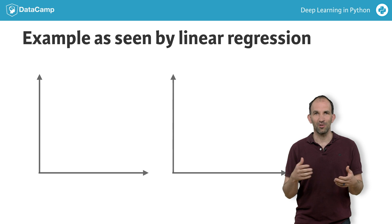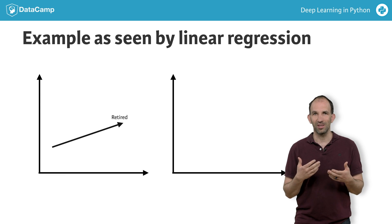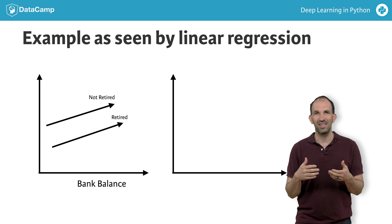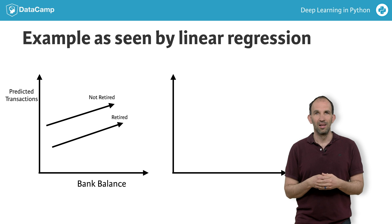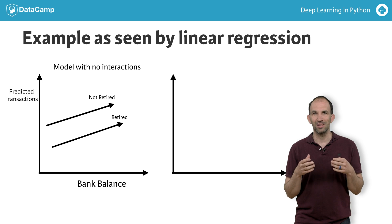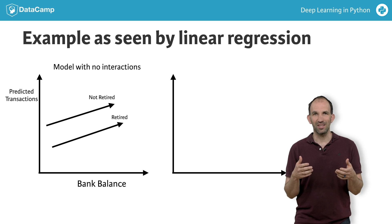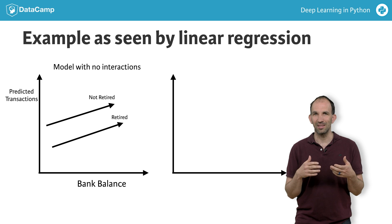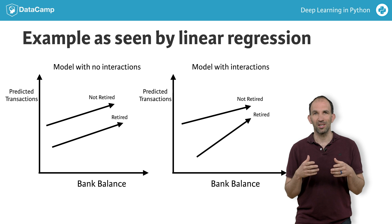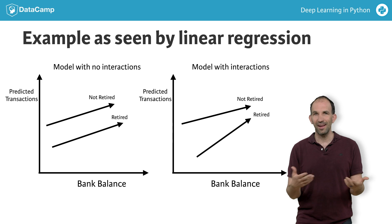Say we plot predictions from this model. We draw one line with the predictions for the retired people, and another with the predictions for those still working. We put current bank balance on the horizontal axis, and the vertical axis is the predicted number of transactions. The left graph shows predictions from a model with no interactions — we simply add up the effect of retirement status and current bank balance. The lack of interactions is reflected by both lines being parallel. That's probably unrealistic, but it's an assumption of the linear regression model. The graph on the right shows predictions from a model that allows interactions, and the lines don't need to be parallel.